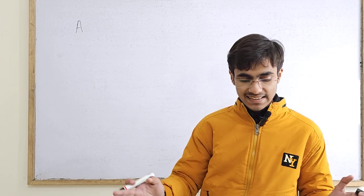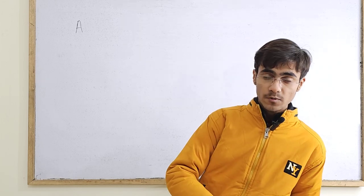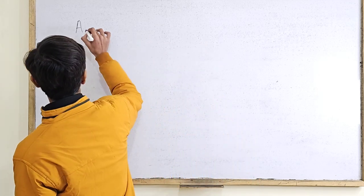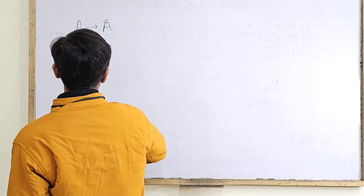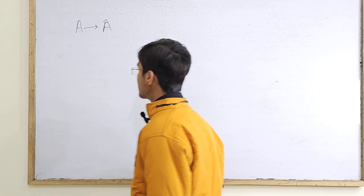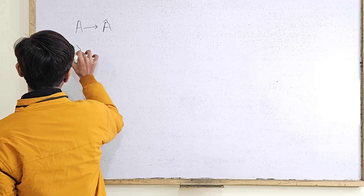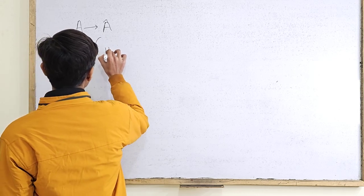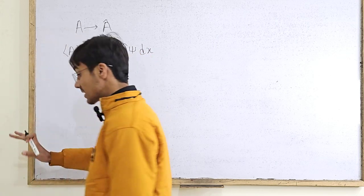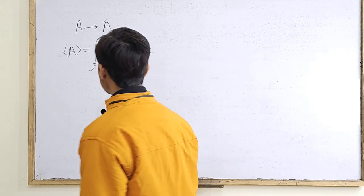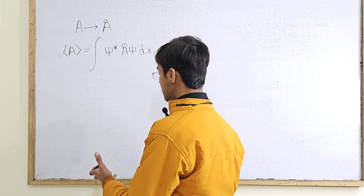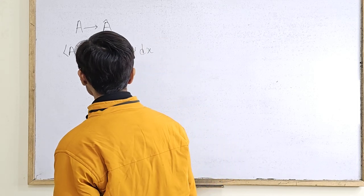For every observable, in any given basis — whether position space or momentum space — you can associate with it a certain operator. So for observable A, we write the operator A-hat. The expectation value of observable A is given by the integral of psi-conjugate times A-hat psi dx, for a system in state psi described by the wave function psi.